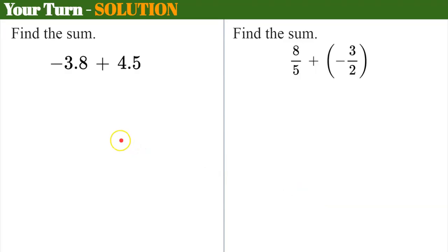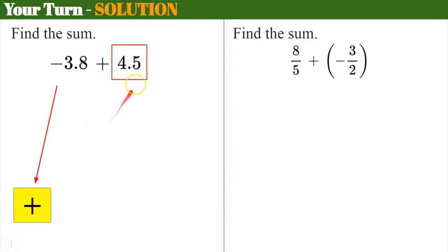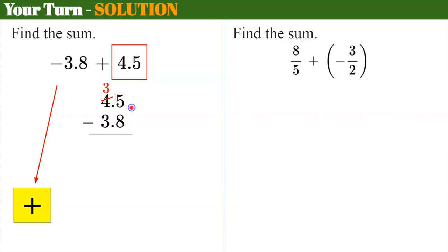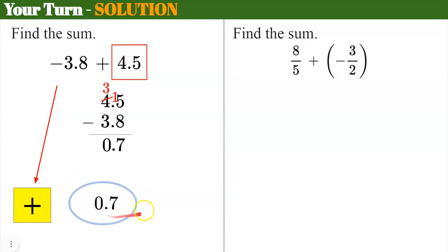Welcome back. Let's check your work. Two different signs: the absolute value of 4.5 is larger than the absolute value of 3.8, and 4.5 is positive, so the sum is going to be positive. Setting up subtraction — I can't take 8 away from 5, so I borrow from the 4. Fifteen subtract eight is seven, bring down the decimal point, three subtract three is zero. Reminding myself that my answer is positive — the sum is positive 0.7.